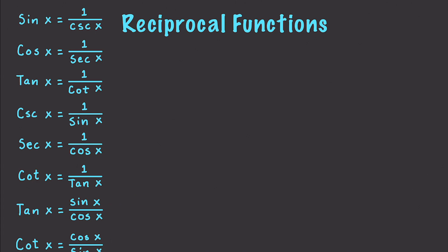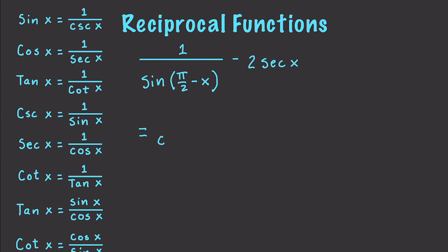Let's solve a problem. Say we have sine of pi over 2 minus x minus 2 secant x. This equals cosine of x minus 2 secant x. We can simplify cosine of x using its reciprocal to get secant x minus 2 secant x, which equals negative secant x.